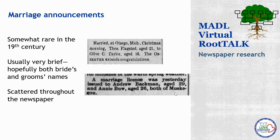Another example that gives us a great clue: a May 1899 Chronicle marriage license announcement. 'A marriage license was yesterday issued to Andrew Backman, age 29, and Annie Bew, age 26, both in Muskegon.' With this date from the Chronicle, you could go forward and look for the actual announcement of the marriage, or with the full names, look for a marriage certificate in county records to see that the marriage actually occurred.